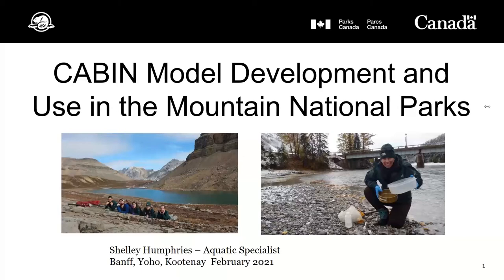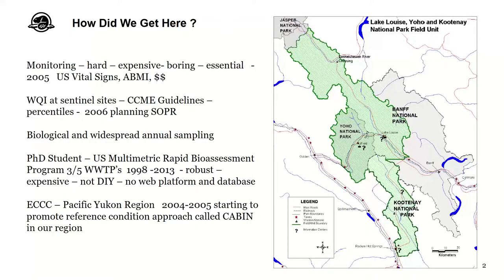Inside the mountain parks I have a team of people that help me do this work in the fall, and I am also speaking on behalf of all seven mountain national parks, which include Waterton, Revelstoke, and Glacier in addition to the four that are connected: Jasper, Banff, Kootenay, and Yoho.